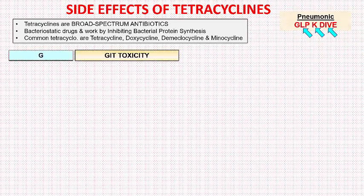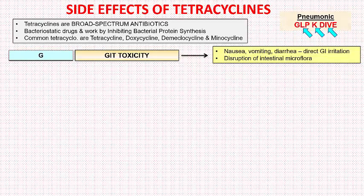The first letter G stands for gastrointestinal toxicity. All tetracyclines can cause direct GI irritation on oral use, leading to nausea, vomiting, diarrhea, abdominal pain, etc. They may also cause esophageal ulcers if the contents of the capsule release in the esophagus during swallowing. Also, high concentration of tetracyclines in the bowel may cause disruption of intestinal microflora, resulting in suppression of normal flora and overgrowth of Pseudomonas, Proteus, Candida, etc. This may rarely cause pseudomembranous colitis.